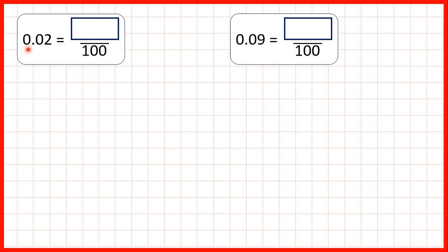Now we have 0.02. Remember the first digit after the decimal point tells us how many tenths we have, and we don't have any tenths because we have a zero. And then the second digit after the decimal point tells us how many hundredths we have, so here we have two hundredths. Now for 0.09 — again, the second digit after the decimal point tells us how many hundredths we have, so we have nine hundredths.